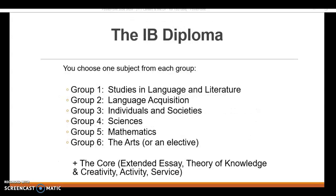Let's have a look at exactly what you study for IB. It's broken down into six groups - each group is a different area of study. You have to choose one from each group, and of those six choices, three must be at higher level and three at standard level for the full diploma. On top of that, we have the core in IB, made up of an extended essay, theory of knowledge, and CAS - creativity, activity, service. I'll talk about those in a moment.